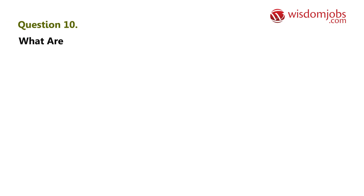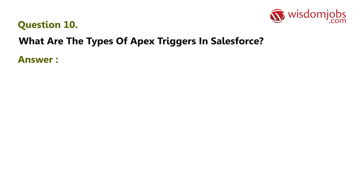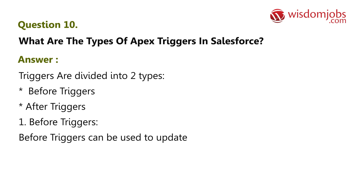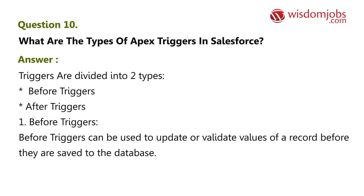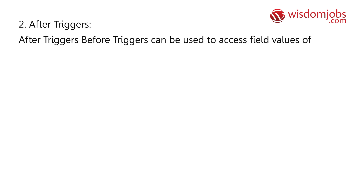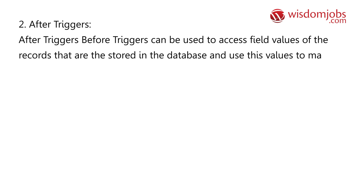Question 10: What are the types of Apex triggers in Salesforce? Answer: Triggers are divided into two types — before triggers and after triggers. Before triggers can be used to update or validate values of a record before they are saved to the database. After triggers can be used to access field values of records that are stored in the database and use those values to make changes in other records.